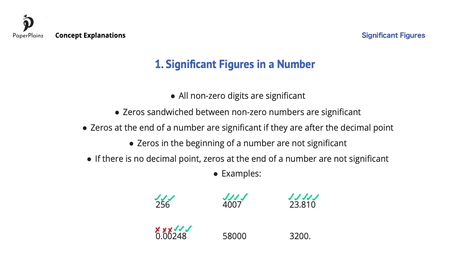If there is no decimal point, zeros at the end of a number — in other words, trailing zeros — are not significant. So in 58000, 5 and 8 are significant; however, the 3 zeros at the end are not.